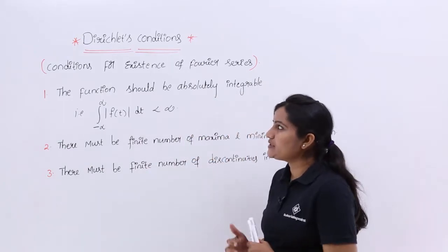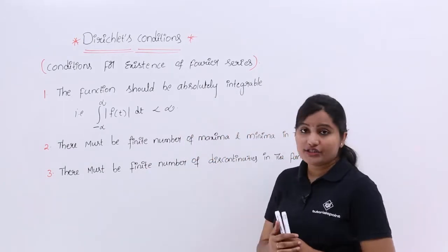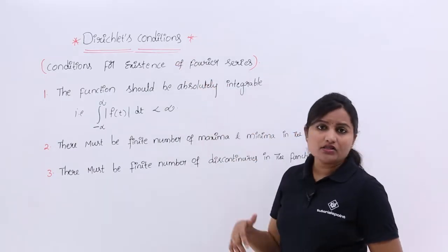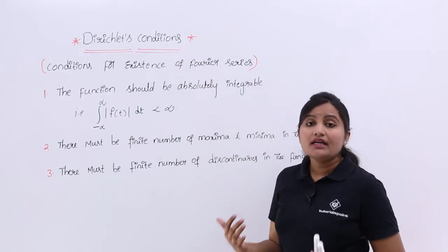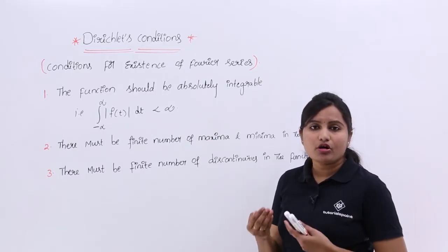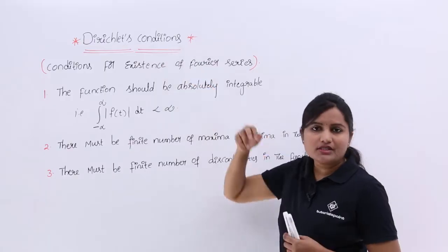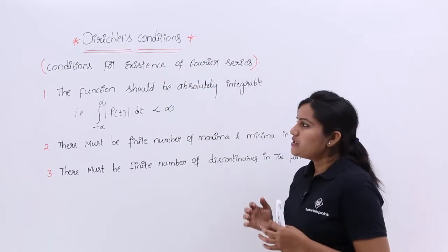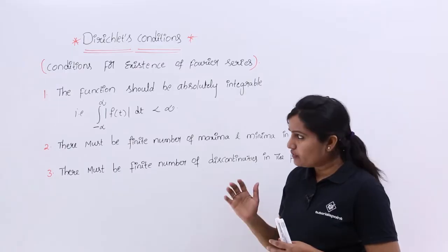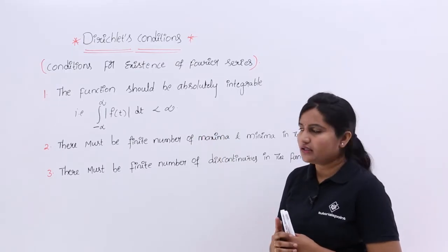Now you can see the conditions for existence of Fourier series — the Dirichlet conditions. They can be asked in exams directly: 'What are the conditions for existence of Fourier series, Fourier transform, or Laplace transform?' In the options, you need to select Dirichlet conditions. The scientist named Dirichlet found these conditions that a signal must satisfy.